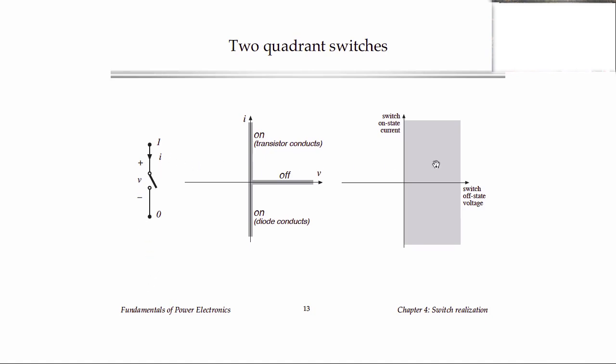So formally, here is the single quadrant switch with the voltage and current directions defined. The combination of transistor and diode have this composite IV characteristic. And as far as the plane of off-state voltage versus on-state current is concerned, we can operate anywhere in the first quadrant or the fourth quadrant.